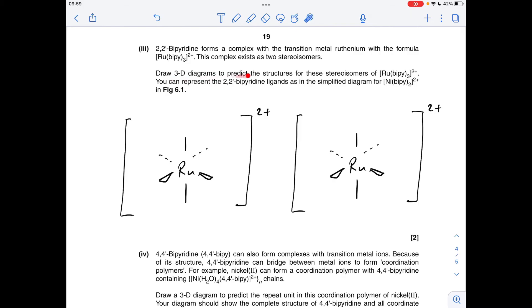Next part of the question: I'm going to draw the 3D diagrams to predict the structures of these ruthenium stereoisomers. You'll notice I've already drawn up my two empty octahedra. These are going to be optical isomers, and we're allowed to use the simplified structure for the ligand. If I start with the left-hand one, let's put the first ligand there, that means the next ligand will go there, that means the third ligand goes there. I just need to mirror that: first ligand there, second ligand there, final ligand there.